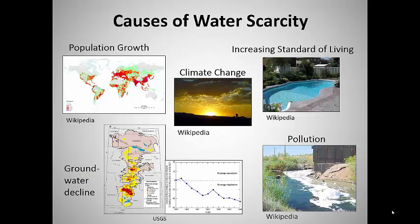There are a number of causes for water scarcity. One is increasing population. More people means greater demand for the freshwater we all need to survive, grow our crops, and manufacture our goods. And as our standard of living rises, so does our demand for water. According to the UNDP, water use has been growing at more than twice the rate of population increase in the last century. And although there is no global water scarcity as such, an increasing number of regions are chronically short of water.